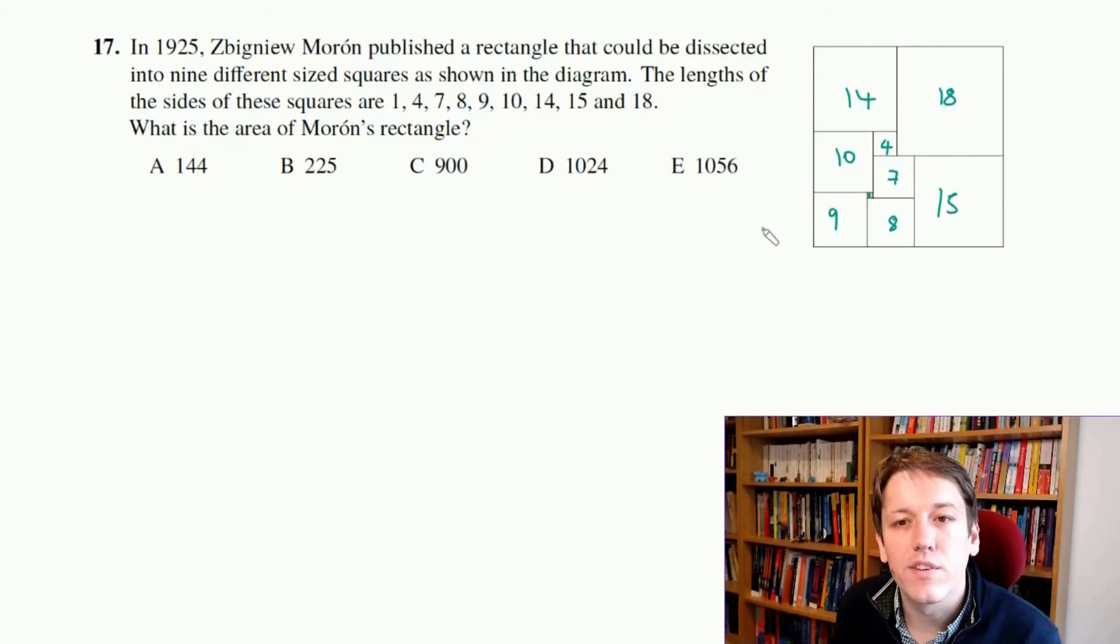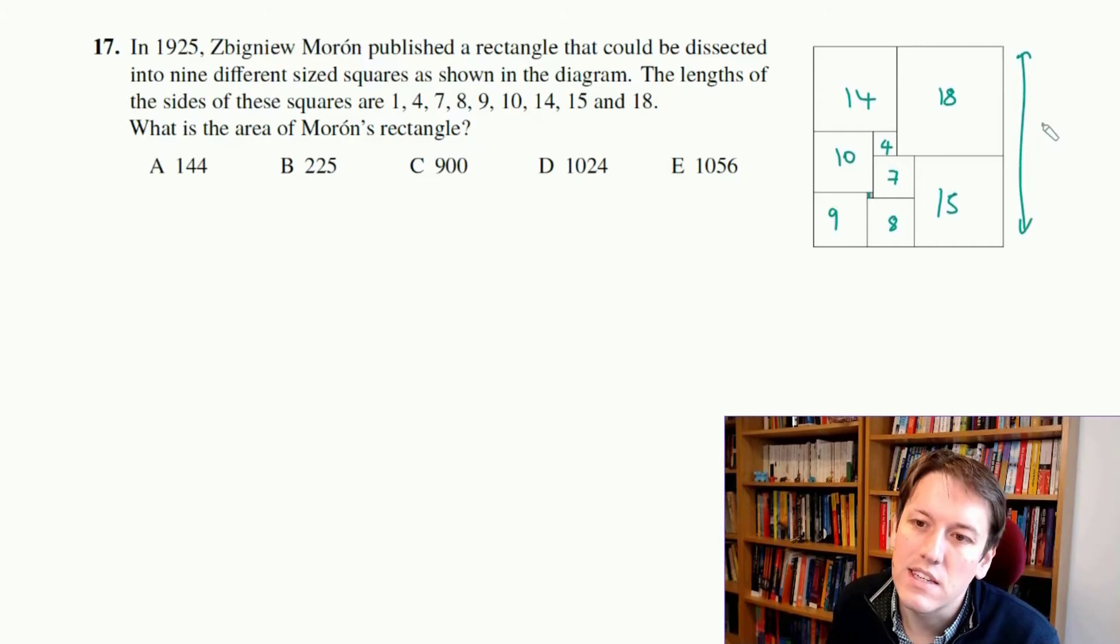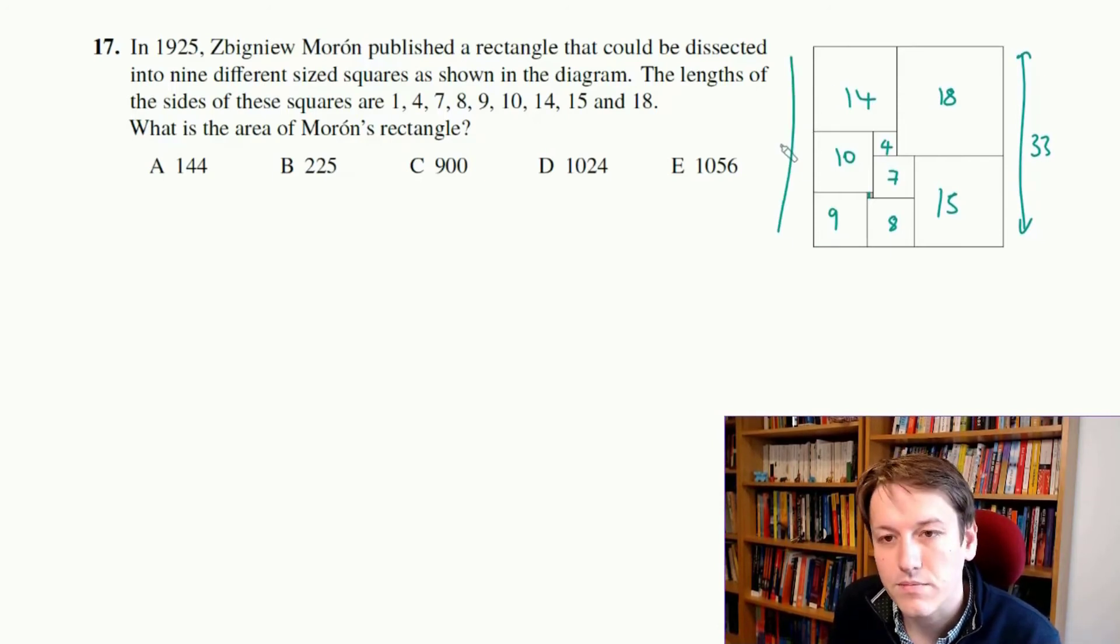Now if I look at the area of the rectangle, and if we look along the sides, so this distance here is 18 plus 15, that's 33, and you can double check that that's the same as 14 plus 10 plus 9, going down the other side if you want to. And along the top, 14 plus 18 is 32, and you can check that's the same as 15 plus 8 plus 9 if you want to be sure.